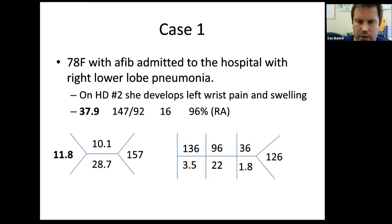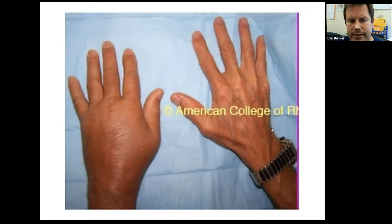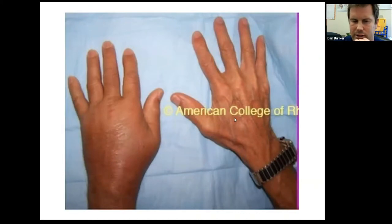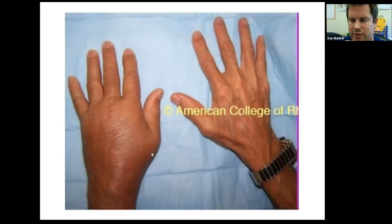Her creatinine is 1.8, which is her baseline. On exam you see her left wrist. It's really important, especially when you're starting out, to compare joints to the opposite side because you'll pick up things that become very obvious when you see them. All of us have seen this type of hand in someone in the hospital from volume overload or a DVT. When you compare it to the opposite side, it becomes very obvious that it's abnormal.